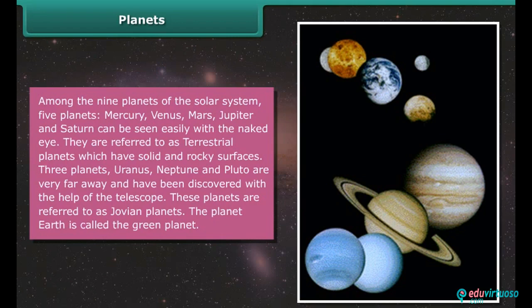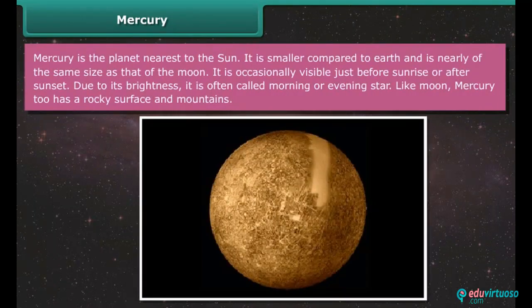They are referred to as terrestrial planets which have solid and rocky surfaces. Three planets—Uranus, Neptune, and Pluto—are very far away and have been discovered with the help of the telescope. These planets are referred to as Jovian planets. The planet earth is called the green planet.